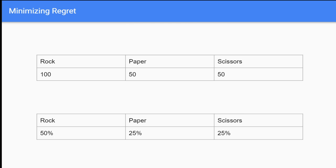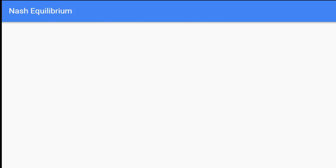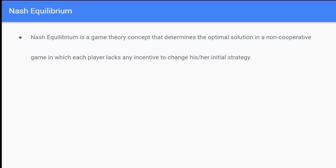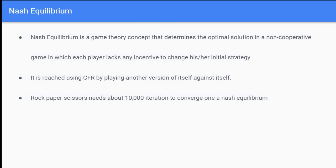The last thing to cover is Nash equilibrium — basically when a computer finds an optimal strategy. To find this optimal strategy, we train two CFR algorithms to play against each other until they converge on the best strategy. For rock paper scissors it takes maybe ten thousand iterations, and the optimal strategy is to randomly choose one-third rock, one-third paper, one-third scissors.